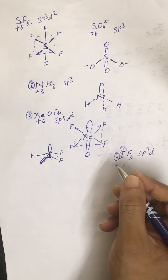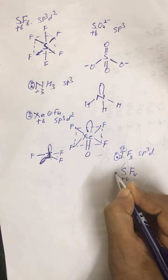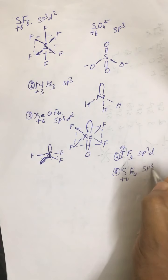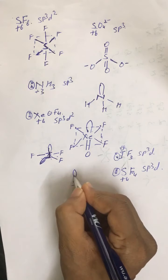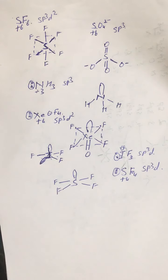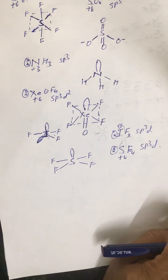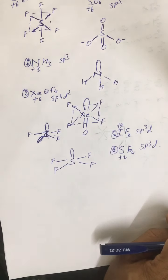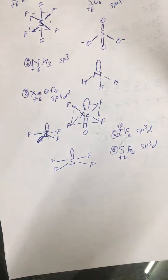For SF₄, the oxidation state is +4, giving one lone pair and sp3d hybridization. The lone pair occupies the equatorial (120°) position in the trigonal bipyramidal arrangement, with four fluorines in the remaining positions — giving a seesaw shape. This is how you write the structures of covalent molecules and ions. In the next lecture, we will discuss how to find dipole moment using a shortcut method.